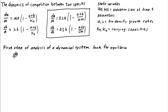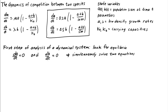In this case, we have two conditions. We need dA/dt equal to zero and we need dB/dt equal to zero. Because for an equilibrium solution, we need that both A(t) and B(t) are constant. This means we have to simultaneously solve two equations.